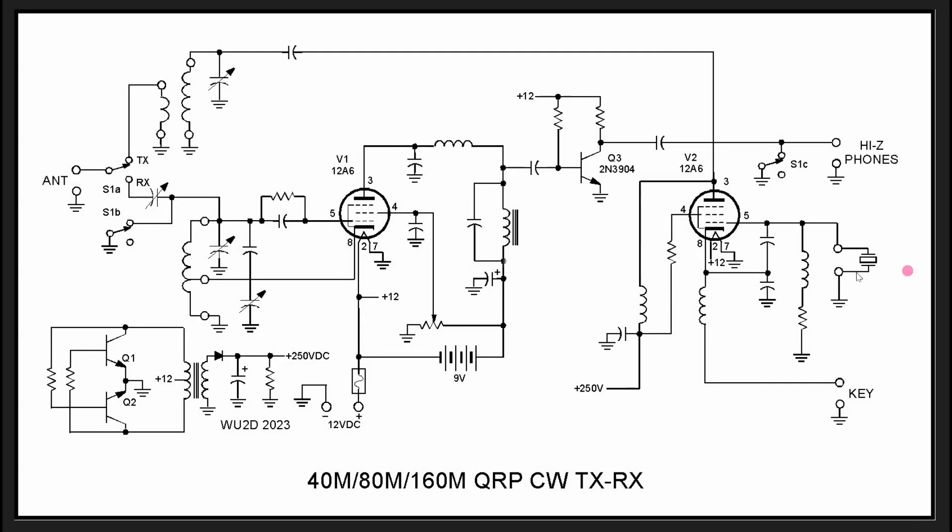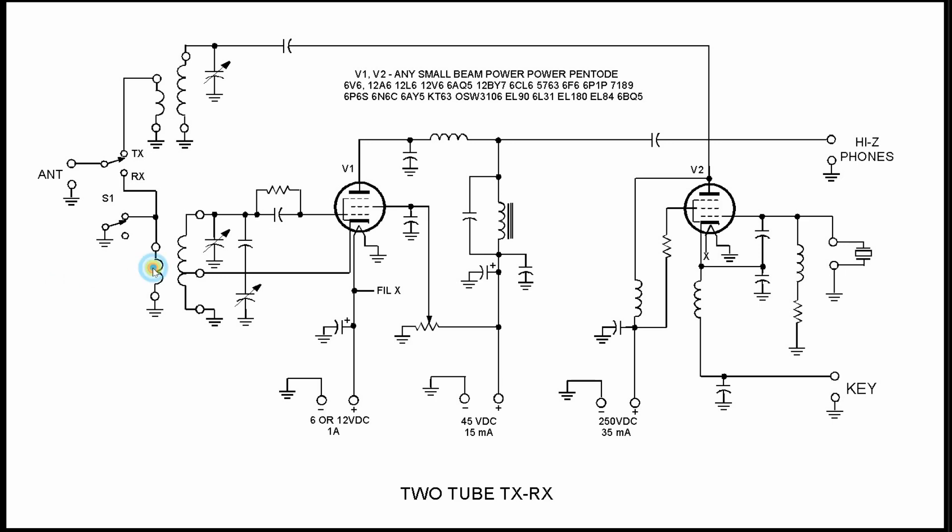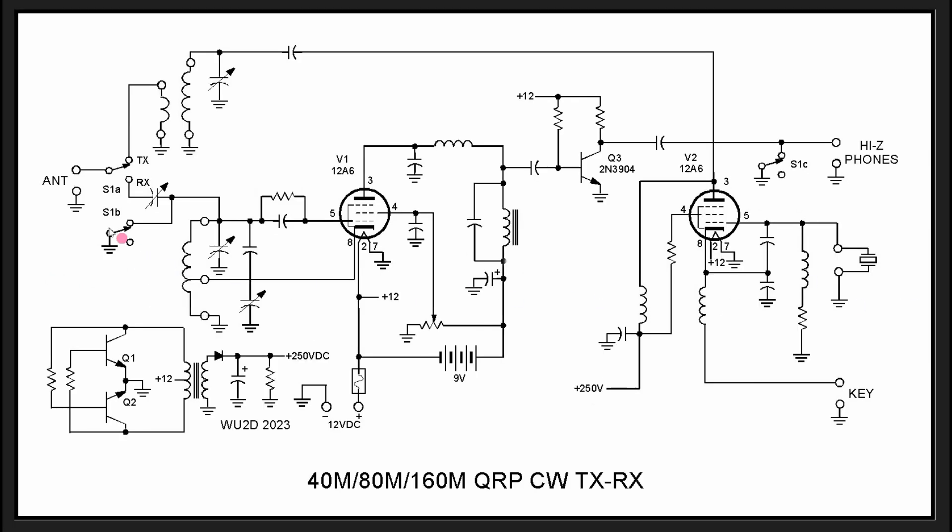Now one of the very clever things that Dwight does with his design is he combines the two onto a single plug-in coil. So by using an octal base and building his own plug-in coil sets, he puts all of the windings on the same coil. Now he does not have the input link winding that typically you would have. He disposes of that and reverts back to top coupling. I suppose the plug-in coil would have become just too complex by adding four windings on it instead of three.